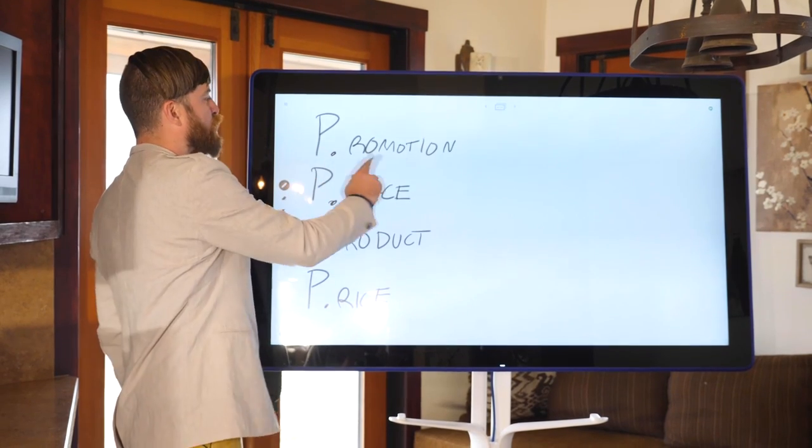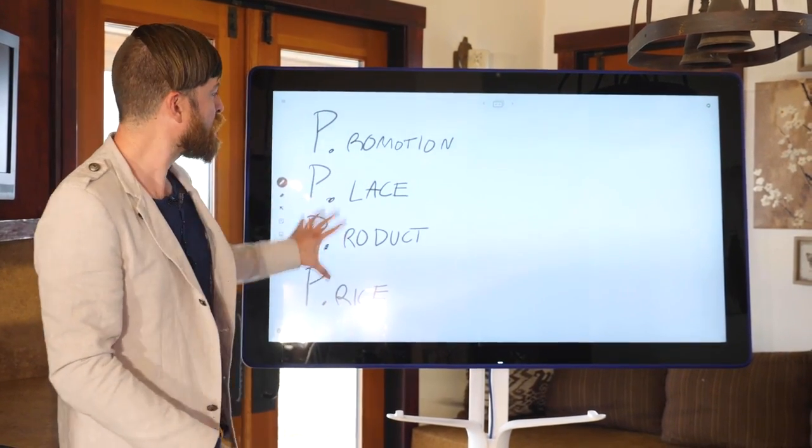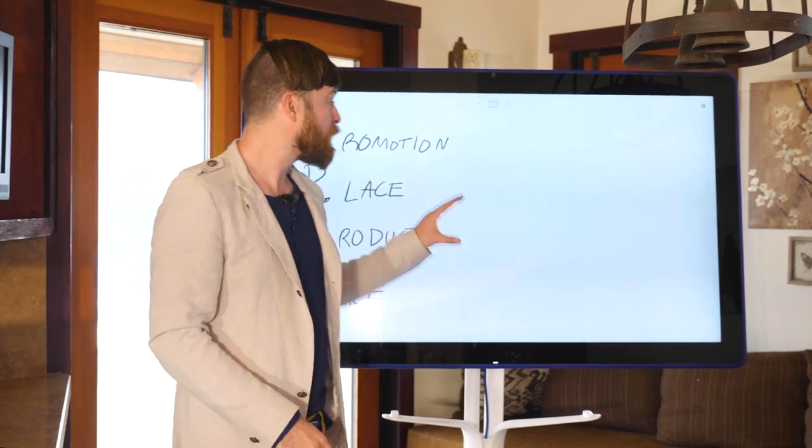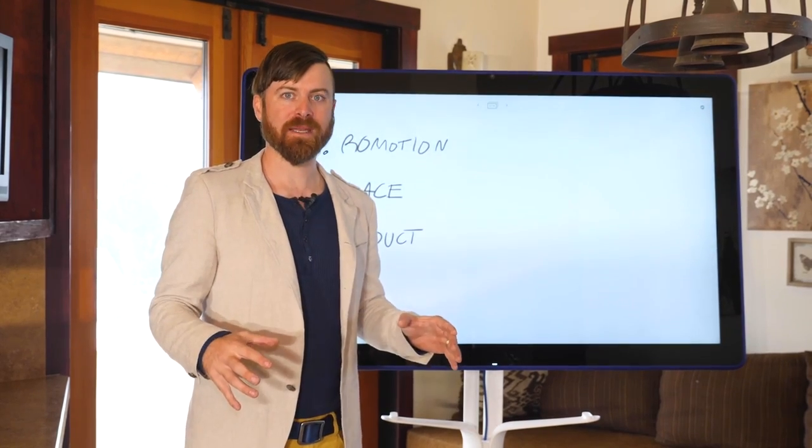I'm going to go over basically promotion, place, product, and price, which are the four P's of marketing. I'll be explaining how they all work together, what specifically you need in each one, and how it all works. So let's get into it and make some money.